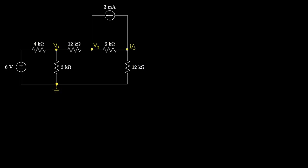Let's begin at node V1. At node V1, we have three currents, and let me give them a direction flowing out. The first current is the voltage across that resistor divided by the resistance. The voltage across that resistor is V1 on one side relative to ground, and six volts on the other side relative to ground. So the voltage across this resistor is V1 minus six, and the resistance is 4,000 ohms.